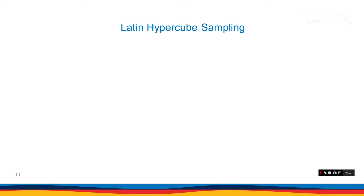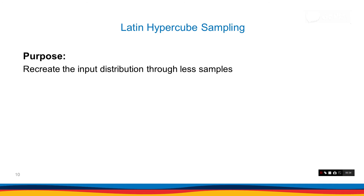Hey guys, my name is Iman and this is tutorial number 4 on Latin hypercube sampling. In the previous tutorials, I talked about Monte Carlo sampling and I said if you want to have a good representation of a probability distribution, n number of samples in the Monte Carlo approach must be large. The sampling set is not a good approximation of the actual probability distribution if n is small. The whole purpose behind Latin hypercube sampling is to recreate the probability distribution with fewer samples compared to the Monte Carlo approach.